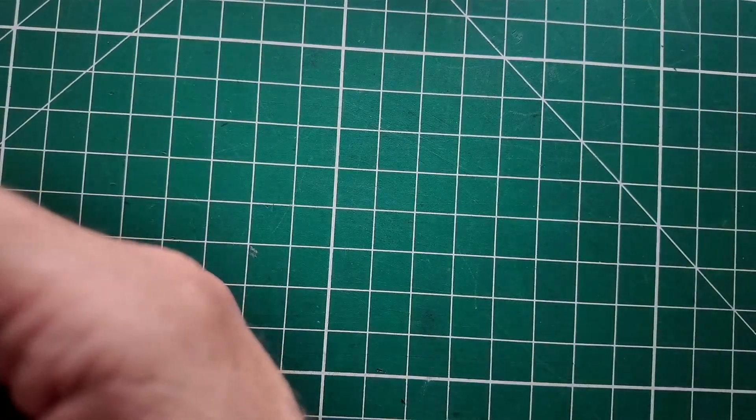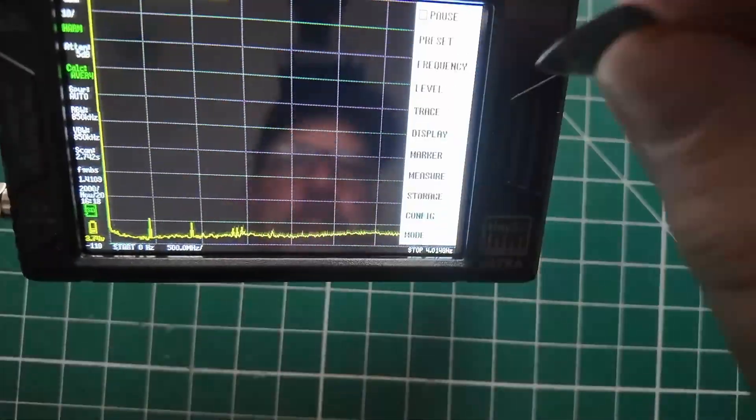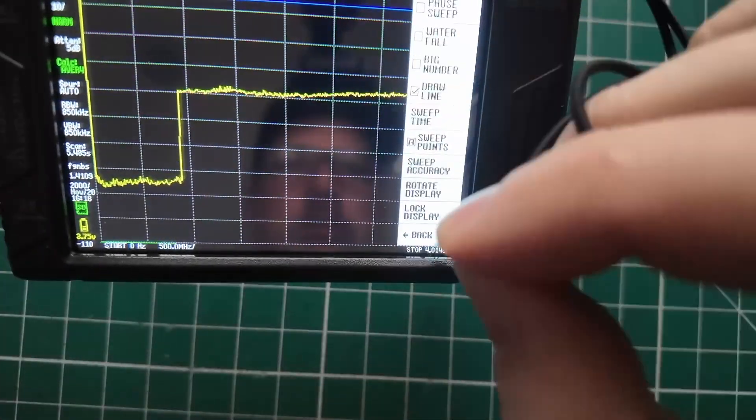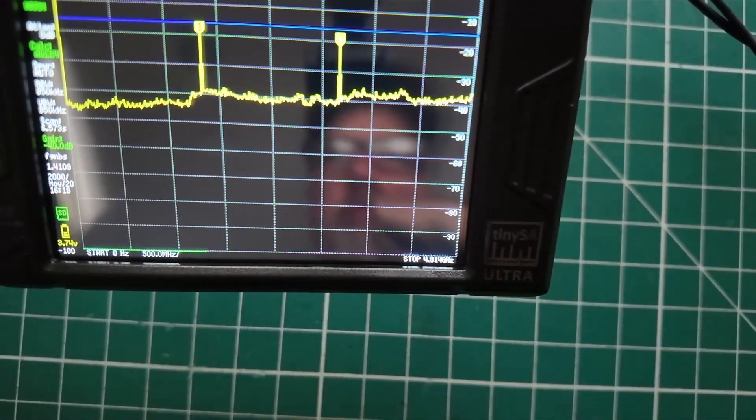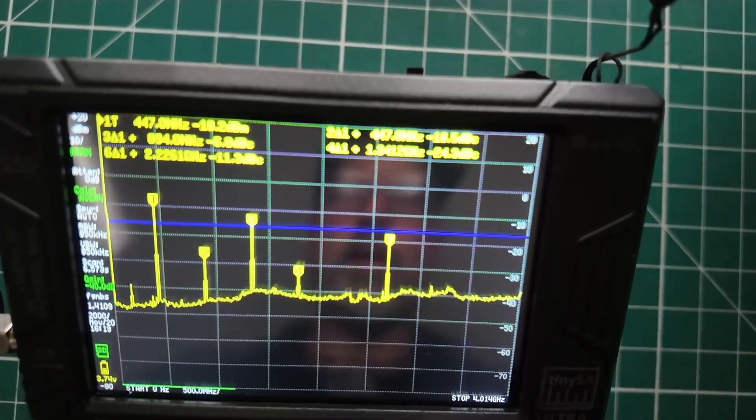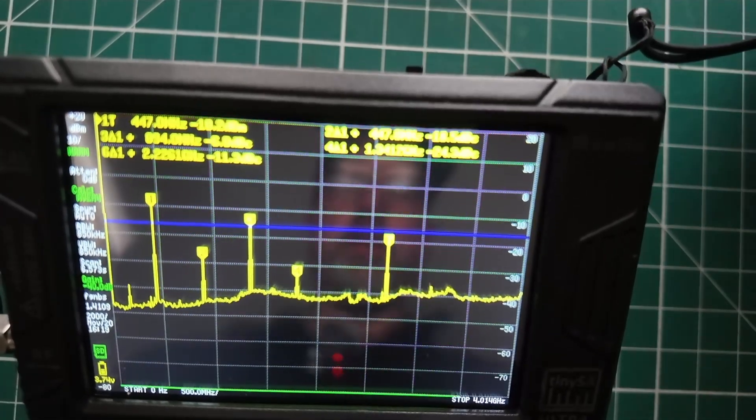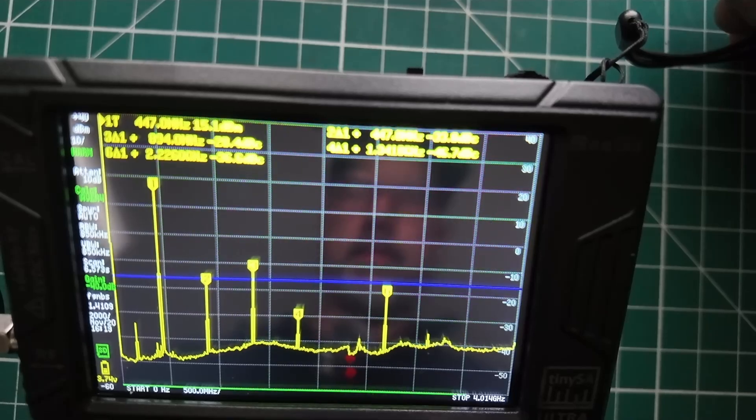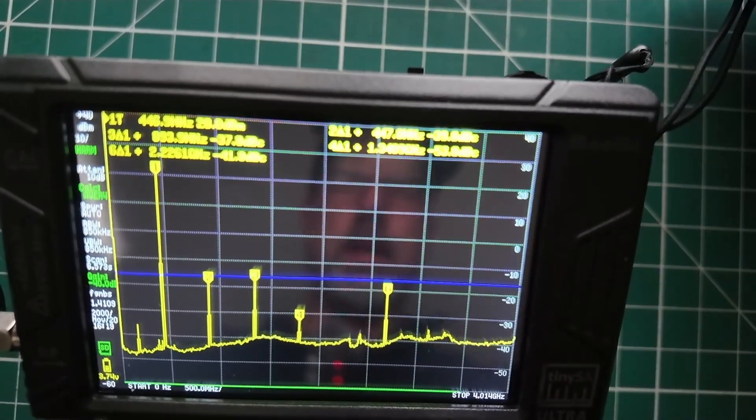Let's change over to 446. All right, let's do the same thing. There we go. Now it's starting to show up. It does take a while for this thing to sort itself out and figure out what it's doing. All right, so all of our harmonics are below the line on 70 centimeter. Not bad.